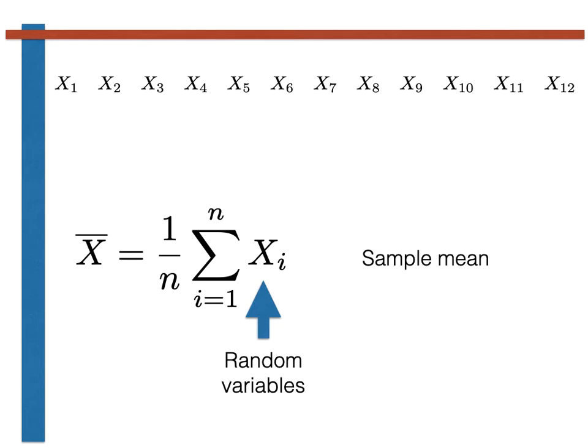Each of the data points would enter within the sum here and each one would be a random variable. As all these variables are random, the sample mean that we calculate in this way is also a random variable, i.e., not a fixed quantity.